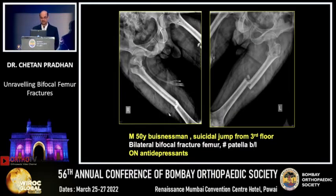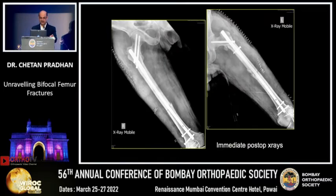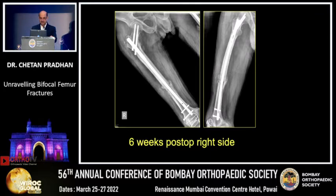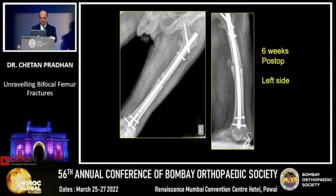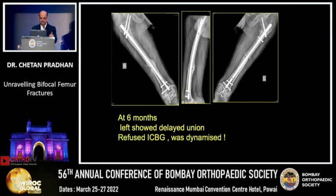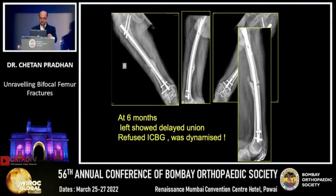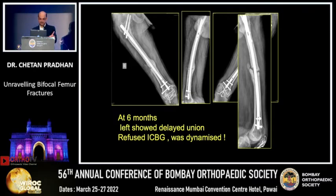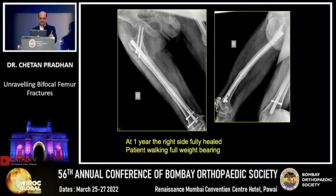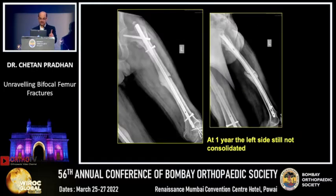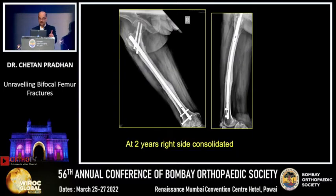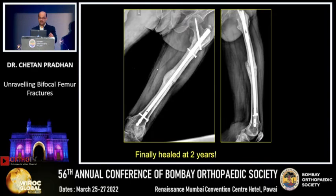Another example: a suicidal jump by a depressed gentleman with exactly identical fractures on both sides — bilateral bifocal with patella. This was treated on both the right and left sides. At six weeks post-op, the right side is showing callus but the left side is not consolidating in the shaft. At six months, the left showed a delayed union, so I advised bone grafting, but he was mentally deranged and refused. I dynamized it. At one year, the right side had fully healed and the patient was walking full weight bearing, but the left side was still not consolidated and the patient was still not willing for revision. At two years, the right side healed and then the left side also healed.